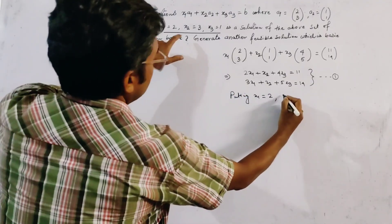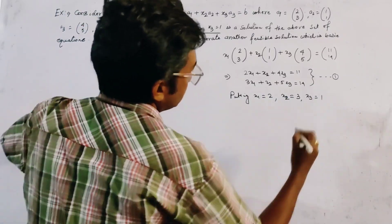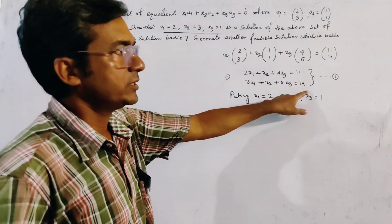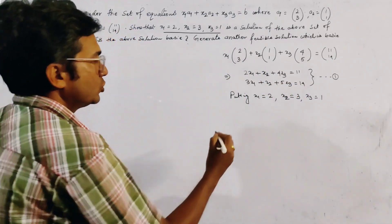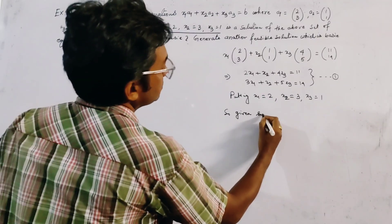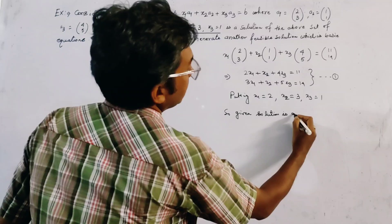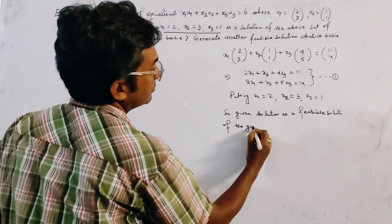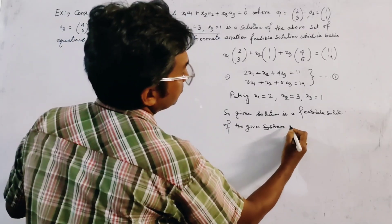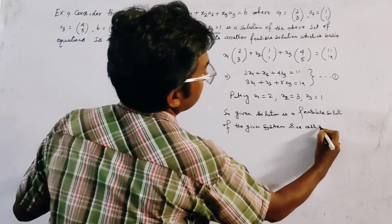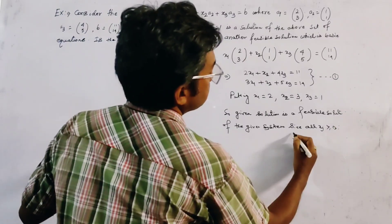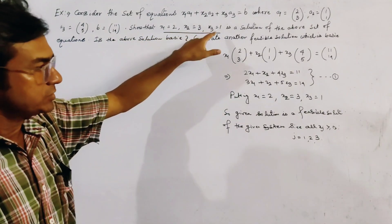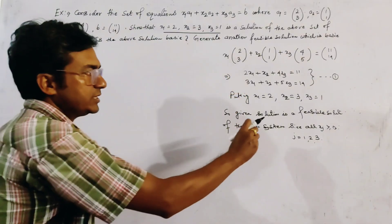Putting x1=2, x2=3, and x3=1 into the system, we get 4+3+4=11 and both equations are satisfied. So the given solution is a feasible solution of the given system, since all xj ≥ 0 for j=1 to 3.